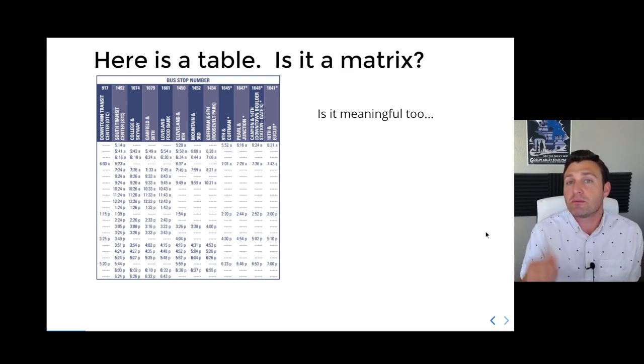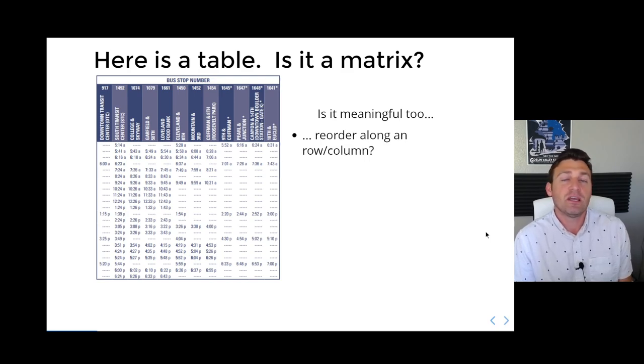We can ask this question: is this a matrix? In one sense it is—you can store this as a matrix data structure, nothing will prevent your program from doing so. Let's ask ourselves if this is meaningful. If we reorder the rows or columns of this table, would anybody be served?